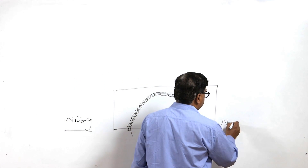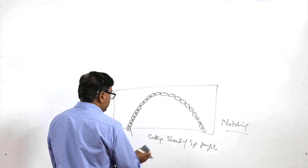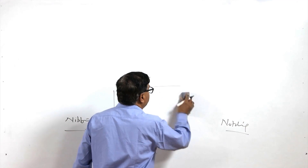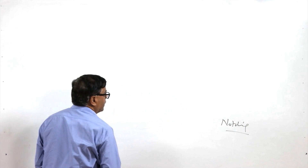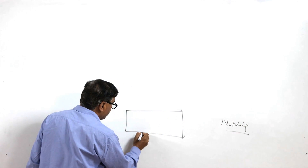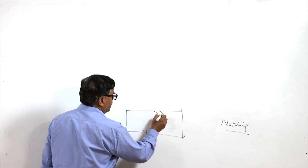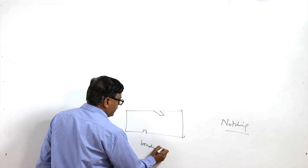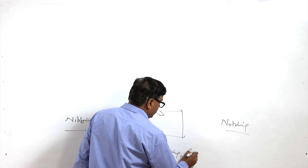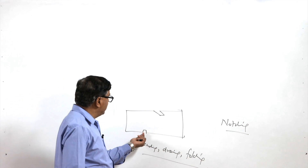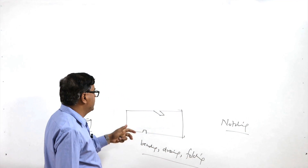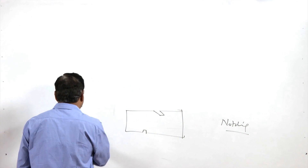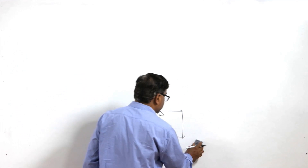In notching, material is removed from the sides/edges of the sheet, and this is primarily used to facilitate the folding and bending of sheet metal. A small cut is made at the sides so that the sheet can be bent, drawn, and folded. Such cuts made at the edges using die and punch to facilitate bending, drawing, and folding are termed notching.